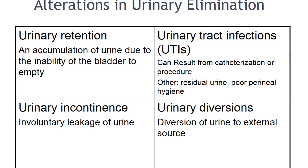As urinary retention progresses, retention with overflow develops; bladder distention is apparent, and the client may void small amounts two to three times an hour with no real relief. Urinary tract infections, usually caused by E. coli, can lead to the spread of organisms into the kidney and possibly to bacteremia or urosepsis. Asymptomatic bacteriuria is the absence of symptoms with bacteria present in the urine via culture — it is not considered an infection and should not be treated with antibiotics. Microorganisms commonly enter the urinary tract through the ascending urethral route; women are more susceptible because of the short urethra and close proximity to the anus.